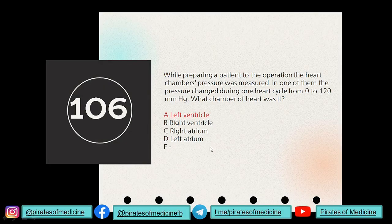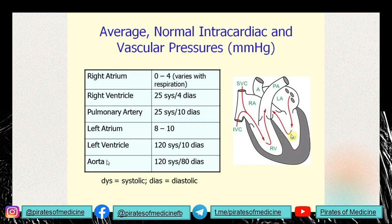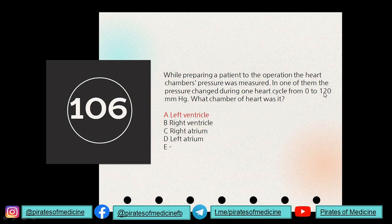Question 106: while preparing a patient for operation, heart chamber pressure was measured; in one chamber the pressure changed during one heart cycle from 0 to 120. What chamber was it? The left ventricle has a systolic pressure of 120, while the right ventricle has a systolic pressure of about 25. The pressure variation from 0 to 120 clearly indicates the answer is the left ventricle.